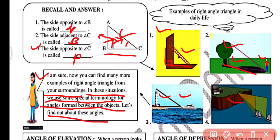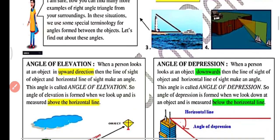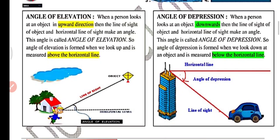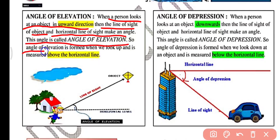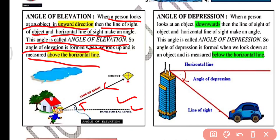In these situations we use special terminology for angles formed between objects. Today's topic is angle of elevation and angle of depression. The angle of elevation is formed when a person looks at an object in the upward direction. The line of sight to the object and the horizontal line make an angle, and this angle is called the angle of elevation. It is measured above the horizontal line, abbreviated as AOE.